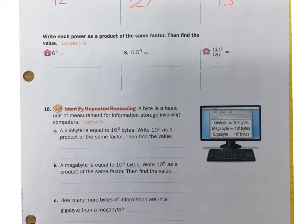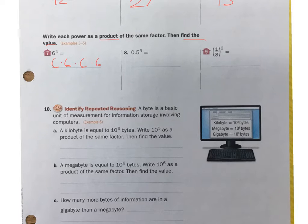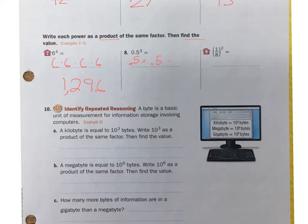Write the product power as a product and then find the value. So 6 to the 5th is 6 times 6 times 6 times 6 times 6. I can do this on my calculator: 6 times 6 is 36, times 6 more, then times 6 more — it's going to give me a total of 7,776. Number 8: 0.5 to the 3rd power is 0.5 times 0.5 times 0.5, and when I do that I get 0.125.